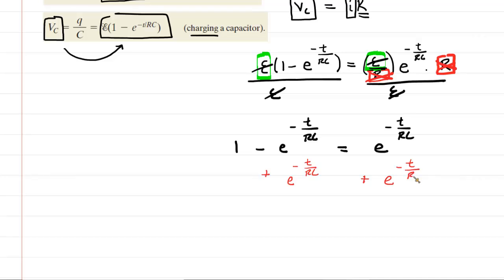They will indeed cancel out on the left side, leaving us with just one. On the right-hand side, you're going to have two times that term, E to the negative T over RC.